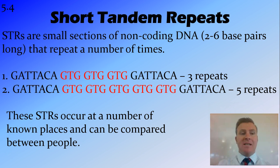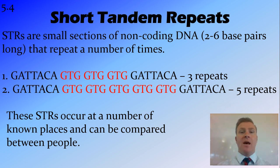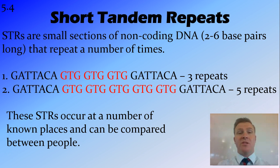Starting off with the STRs — they don't have a cool way to pronounce them. These are small sections of DNA found in the non-coding DNA. So we're not talking about the DNA found in a gene; we're talking about the DNA found between genes or the DNA that's cut out in the process of polypeptide synthesis. These short tandem repeats are pretty much just that — a section of DNA with base pairs, usually two to six, that repeat a number of times.